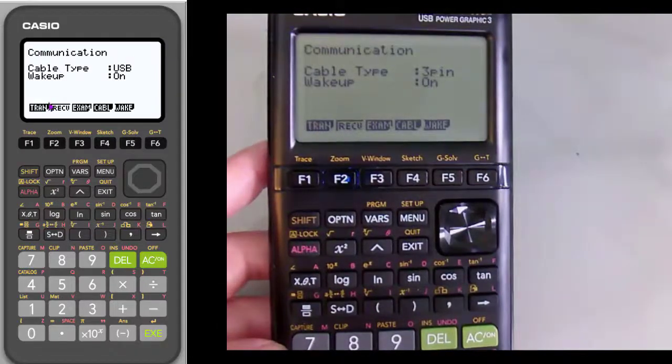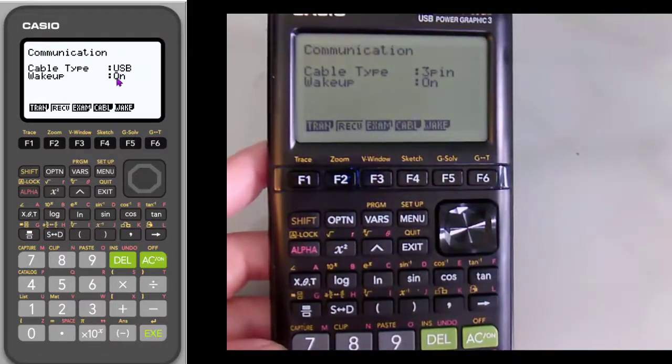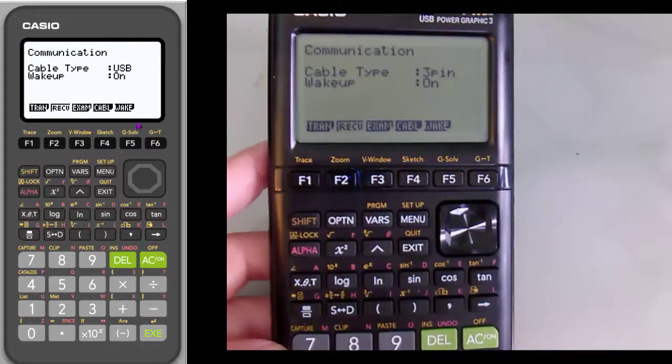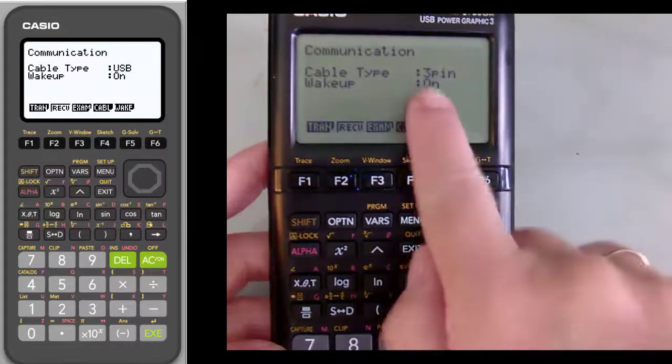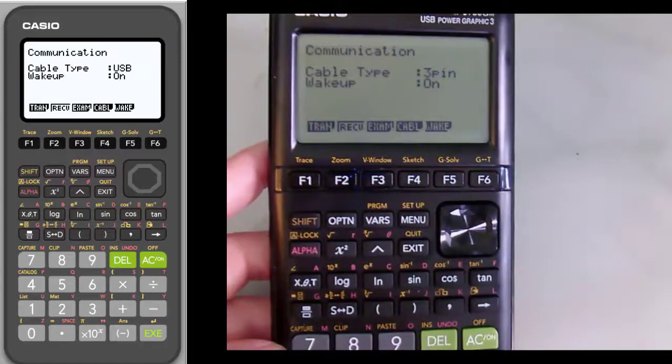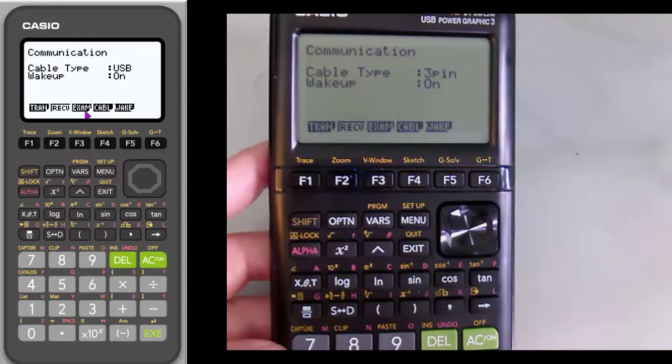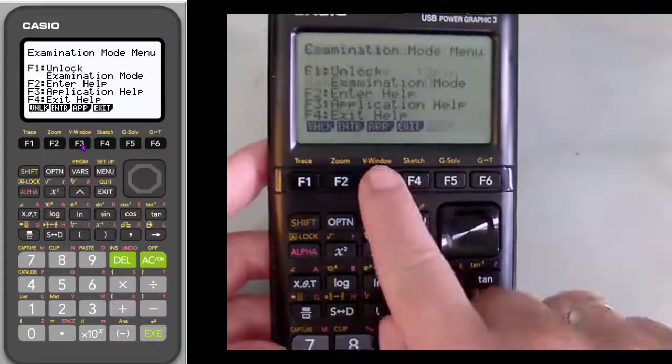And so notice the first thing it does is default to the type of communication. How are you connecting to a computer? This is USB. The calculator right now says three pin. That's not what we care about. If you look across the bottom here, what we want to do is exam. So F3, and I'm going to hit F3 here, same menu.